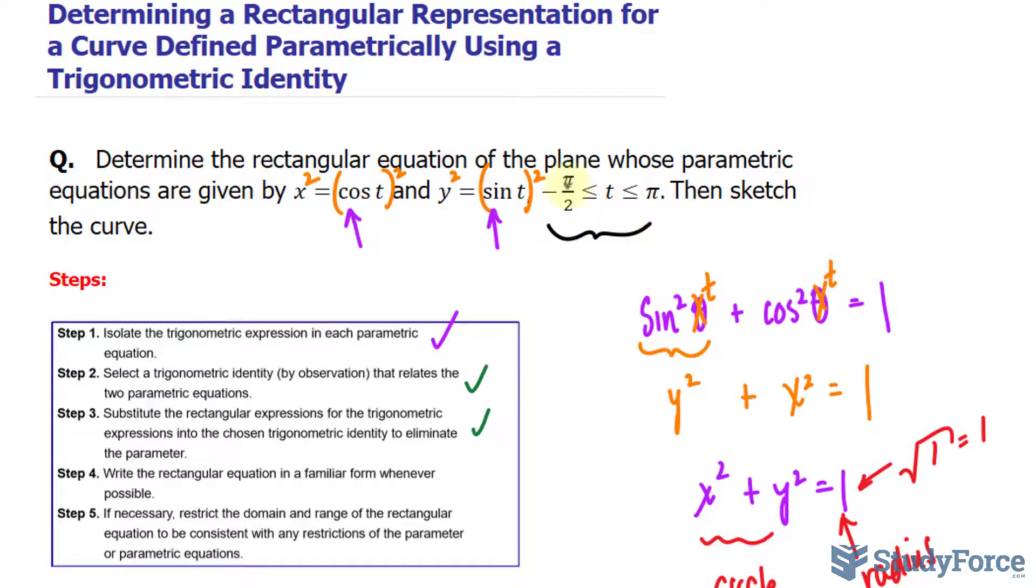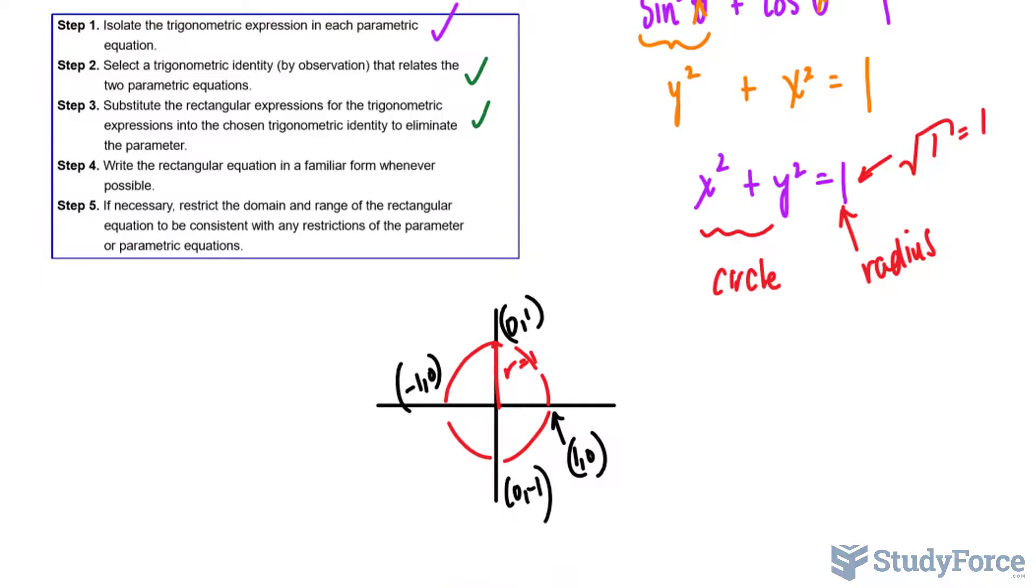Now we have to restrict the domain based on the restriction of the original question. So the original question wanted it from -π/2 to π. -π/2 means that we start right here. Because that is when the angle is zero. And a negative angle means that you're going clockwise. And in this case, clockwise by π/2, which is a quarter circle. So we start right here.